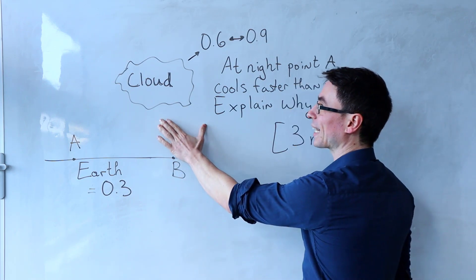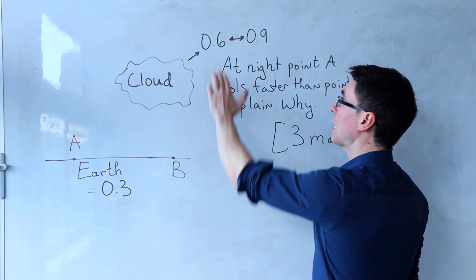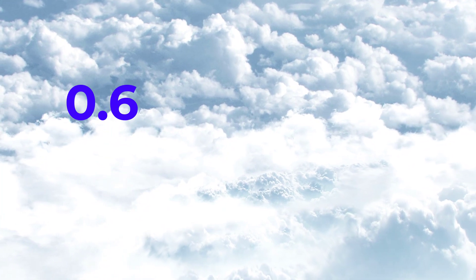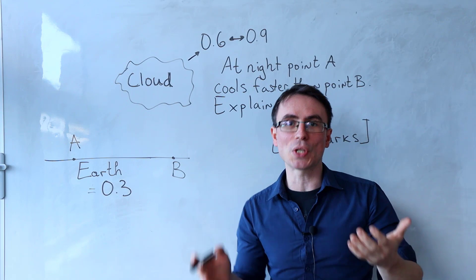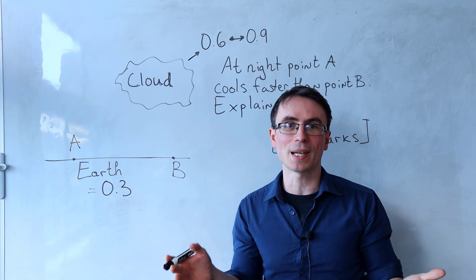On the other hand, a cloud has an albedo number between 0.6 and 0.9, meaning that it reflects around between 60% to 90% of all the radiation.